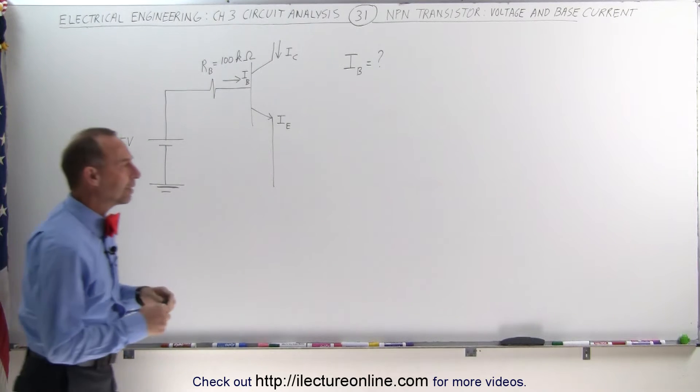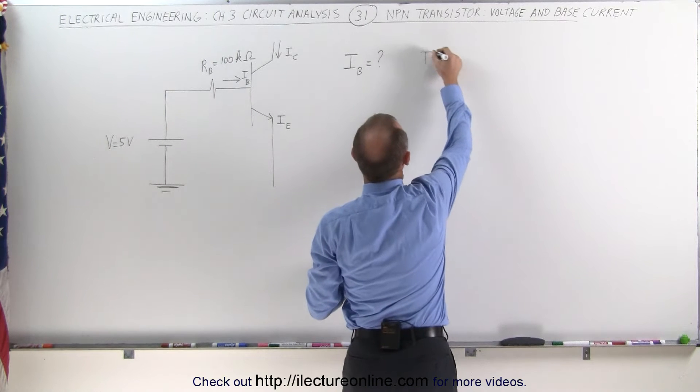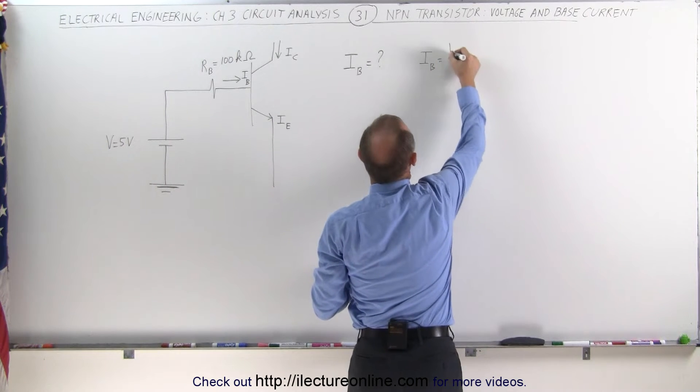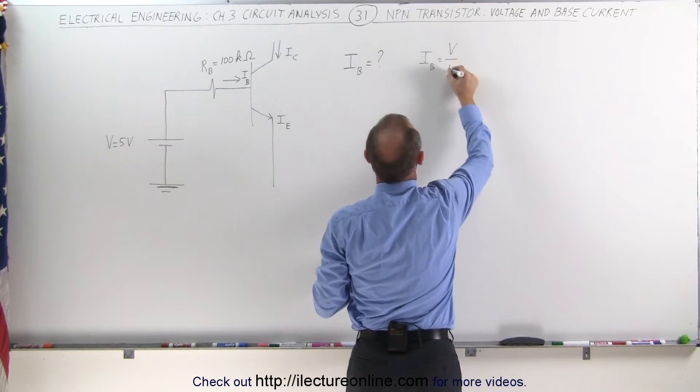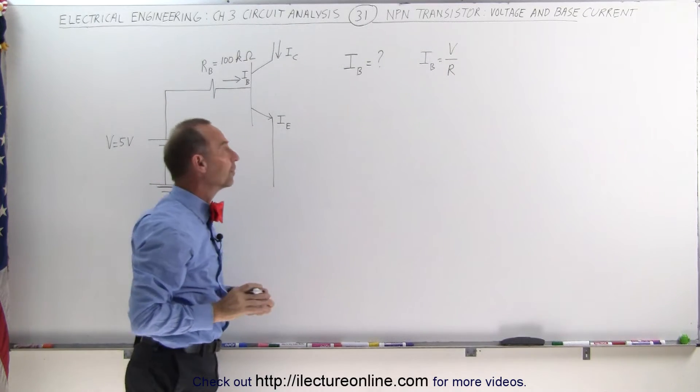Well we know that using Ohm's law, the base current I sub B is equal to the voltage applied on the circuit divided by the resistance. But what is the voltage applied to the circuit?